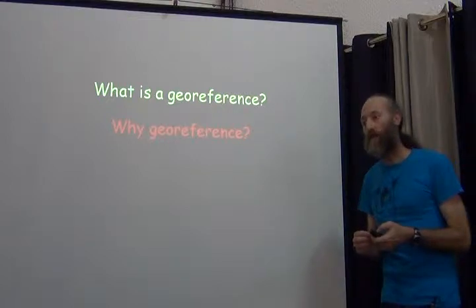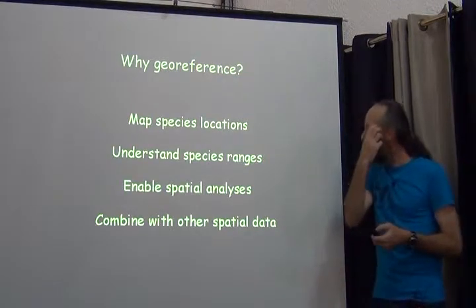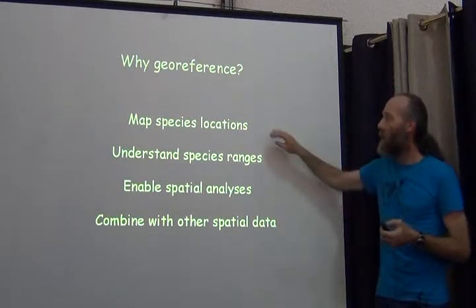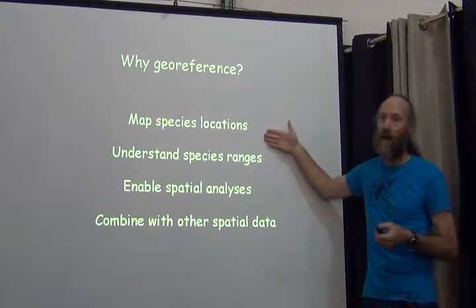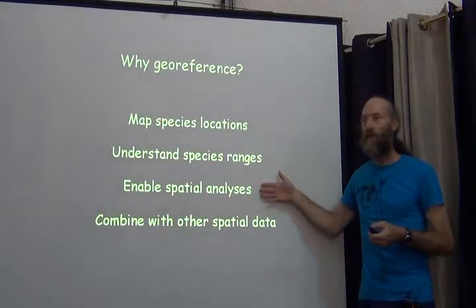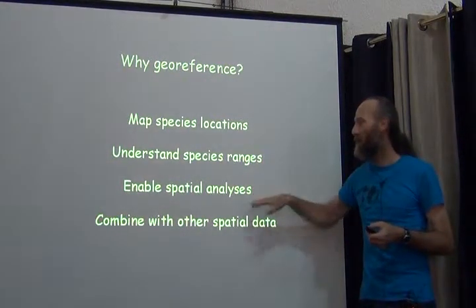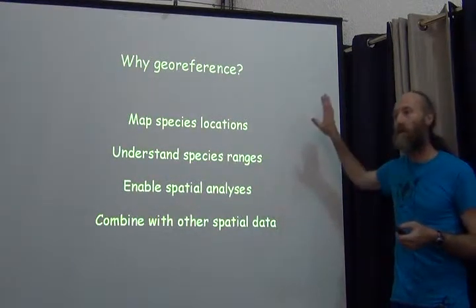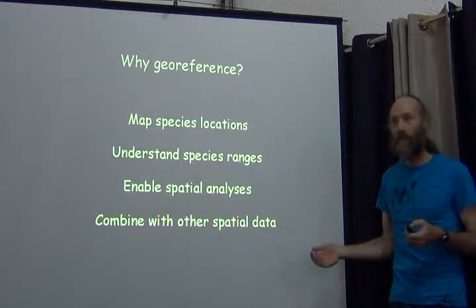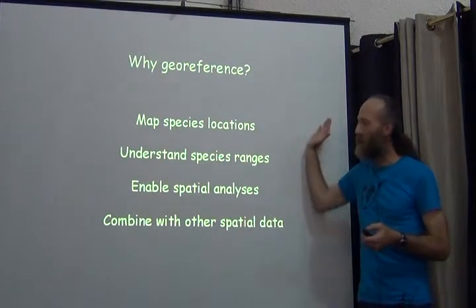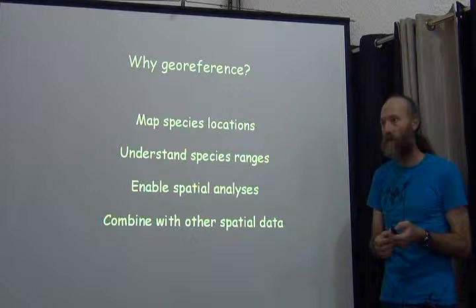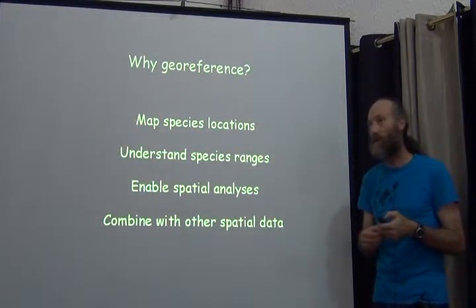Having described what a georeference is or ought to be — why should we do it? There are various benefits of having trustworthy geographic coordinates: to map species locations and to know which points are well known and which are not, helping us understand species ranges. Georeferencing with points, uncertainties, or shapes allows us to do spatial analyses combining species occurrence data with environmental and climate data — bringing biodiversity data into a domain where we can ask entirely new questions beyond morphology.